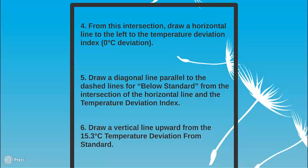Sixth step: draw a vertical line upward from the 15.3 degrees Celsius temperature deviation from standard.